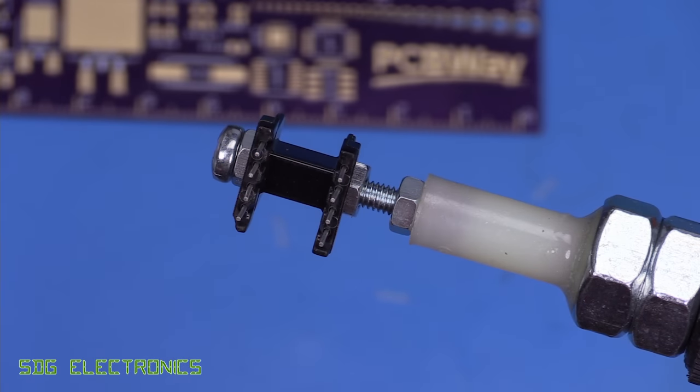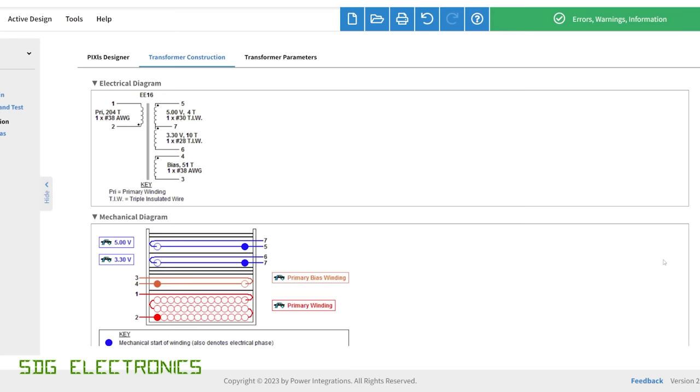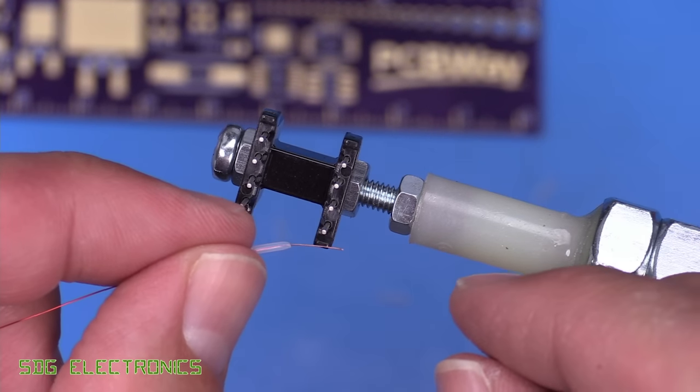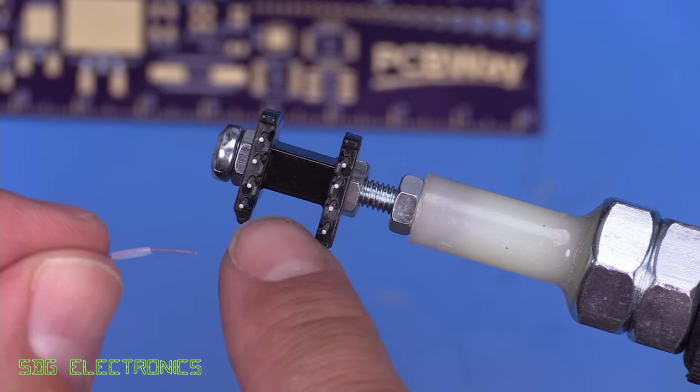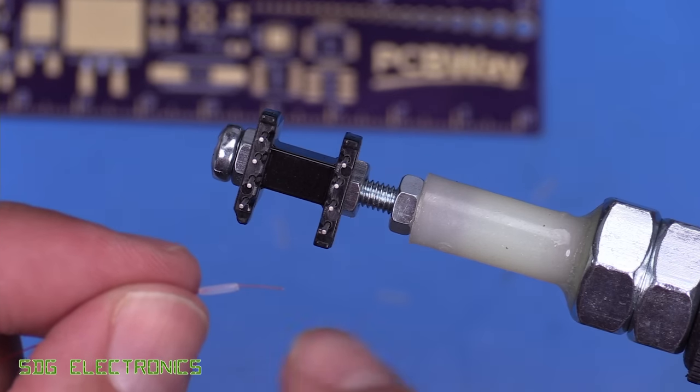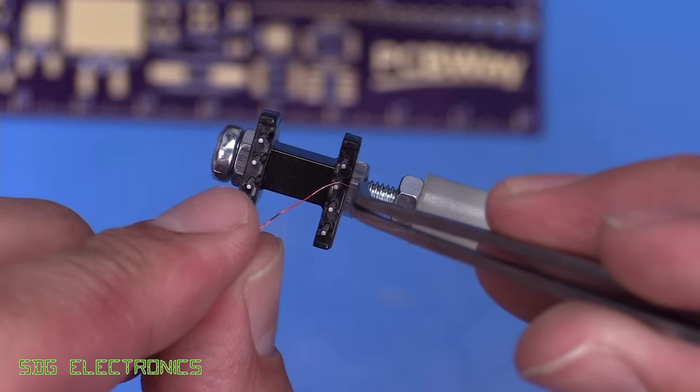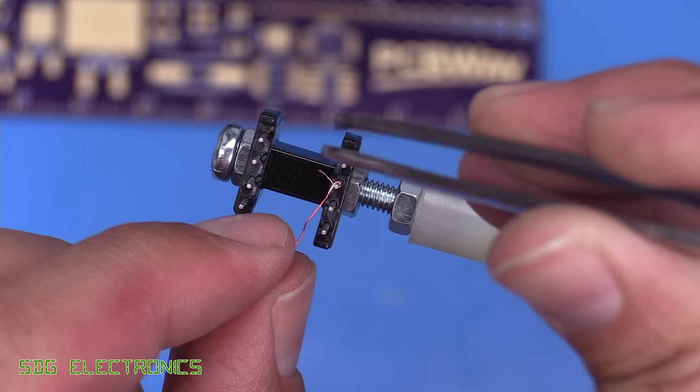Right so first of all we're going to start winding the primary and it needs to begin on pin two and it's important we get this correct because if we look at the diagram for the transformer you can see the little dots which indicate the phase of each of the windings. So I've got some enameled copper wire here and I've just put a little bit of teflon tubing over it just to protect it where it goes from the pin down to the layer of the bobbin. So we'll put this on pin two and just use some tweezers to help get that into place.